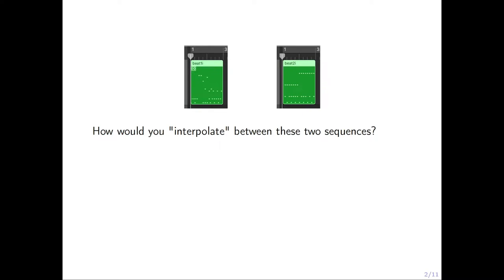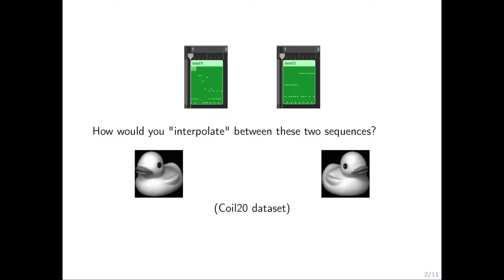How would you interpolate between these two sequences? We can take a look at a more intuitive example given two images. How would you interpolate between these two? We don't interpolate in the pixel level. Instead, we encode the images into low-dimensional space.